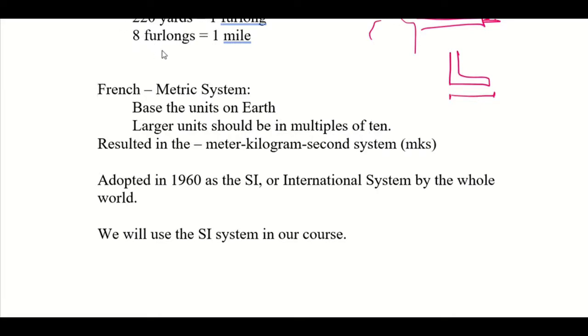They also thought that larger units should be multiples of 10 of the smaller units, and that resulted in the meter-kilogram-second system, also known as the mks system. This system was improved and adopted over time, and in 1960 it was adopted as the SI, or International System, by the whole world. Now slowly over several years, every country of the world let go of their older units and converted to the SI system. That is the system being used all over the world. In this course, we will also use the SI system.